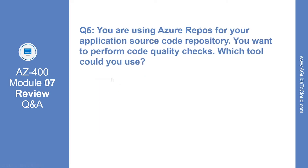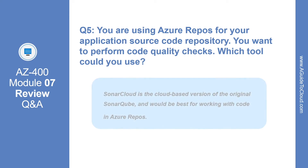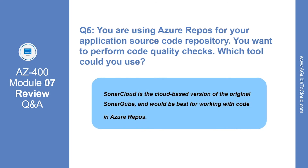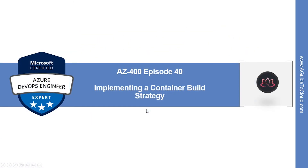Question number five: you're using Azure Repos for your application source code repository and you want to perform code quality checks. Which tool could you use? Sonar Cloud is the cloud-based version of the original Sonar Cube and would be best for working with code in Azure Repos. That concludes this episode. In the next video, we're going to look into implementing a container build strategy. I will see you in the next one. Until then, take care.